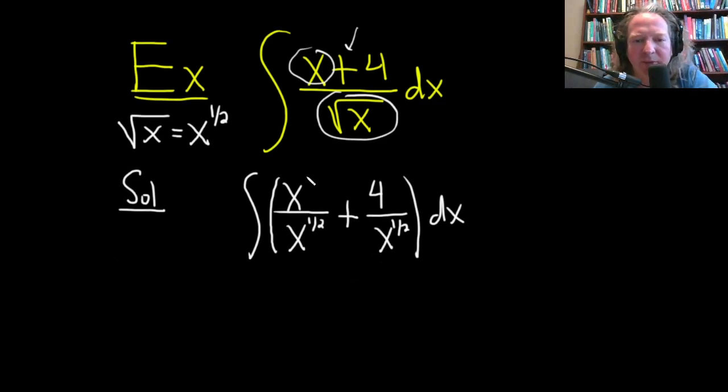All right, there's really a 1 here. So whenever you have something like this, you basically subtract the exponents. Recall if you have, say, x to the m over x to the n, that's equal to x to the m minus n.